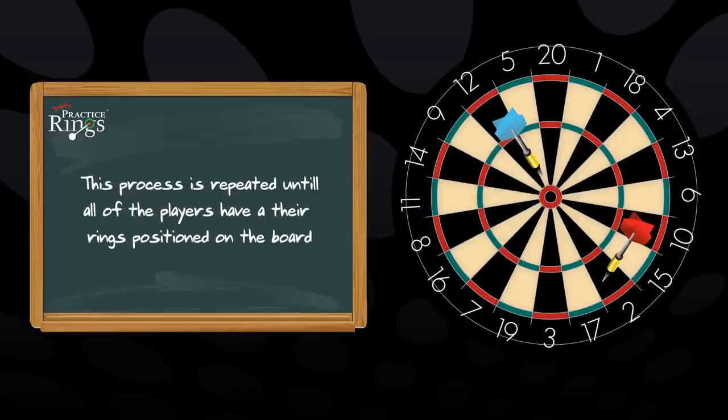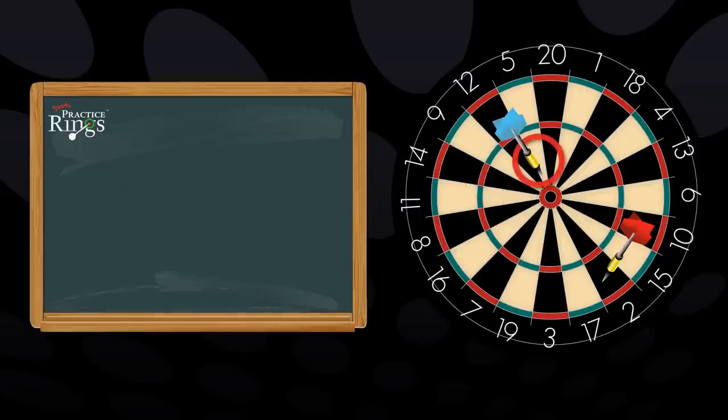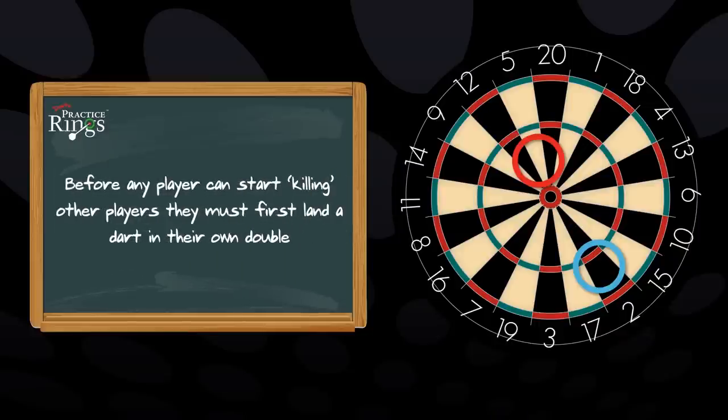Player 3 does the same for player 4's starting point, and player 4 will do the same to determine player 1's starting point. The player who lands their dart nearest to the bull goes first.